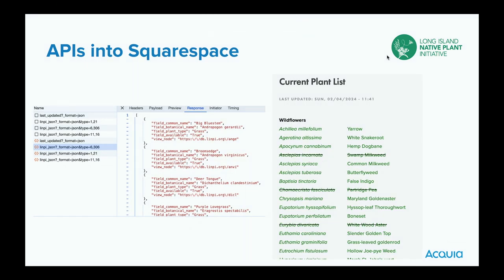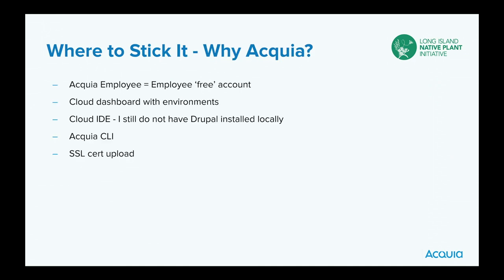The API into Squarespace was great because before we were manually copying and pasting plant availability into the site. Every time something changed — like we don't have swamp milkweed anymore — someone had to update the website too. Why did I host it at Acquia? One: I get a free employee account.